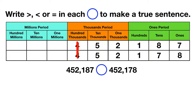Let's look at the ten thousands. In the ten thousands place, we also have a five and a five — they're the same again, so we'll cross those out and keep moving. Next is the one thousands place. Both of these numbers have a two in the thousands place, so when they're the same, cross them out and keep moving. In the hundreds place, we also have a one and a one — they're the same. Cross them out, keep moving.